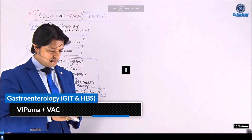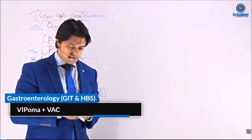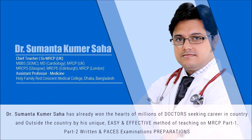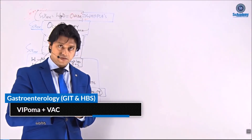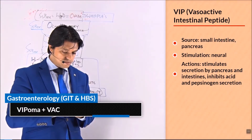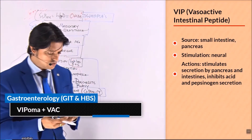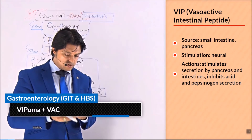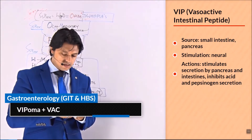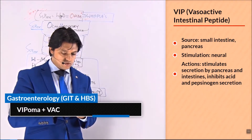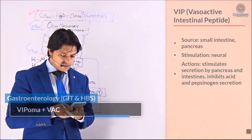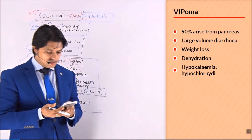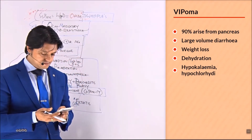Today I'd like to discuss VIPoma. VIP means vasoactive intestinal peptide-secreting tumor. VIP serves the small intestine and pancreas — stimulation of neural action stimulates secretion by the pancreas and intestines, and inhibits acid and pepsinogen secretion. 90% arise from the pancreas and present with large volume diarrhea, weight loss, dehydration, hypokalemia, and hypochlorhydria.